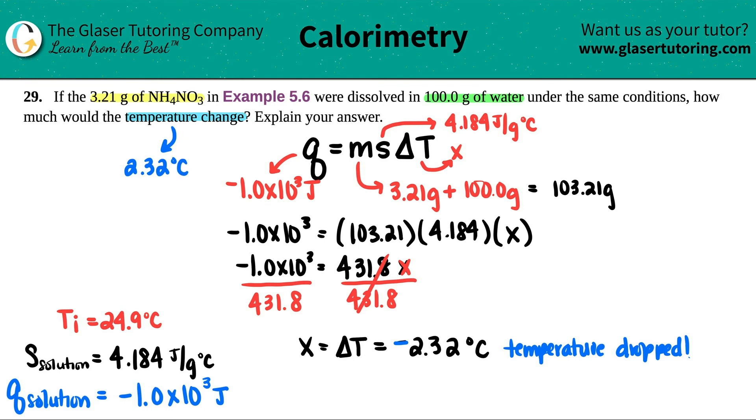Now, if they wanted to know what the final temp was, we take it from the initial conditions. The initial temp was 24.9 degrees Celsius. And if the temperature fell 2.32 degrees Celsius, you would just subtract those two numbers. 24.9 minus 2.32.